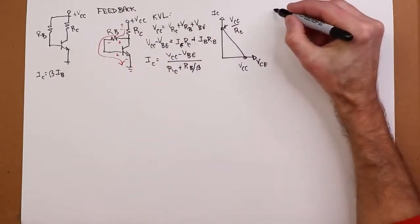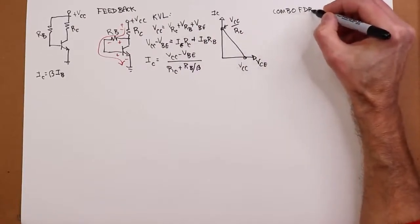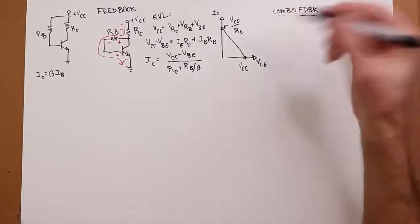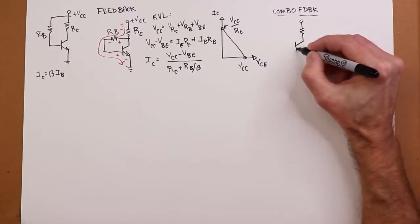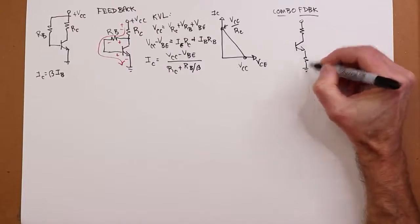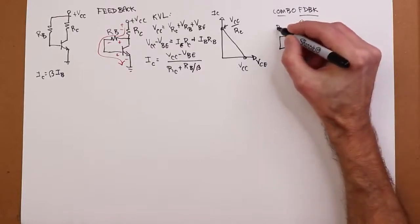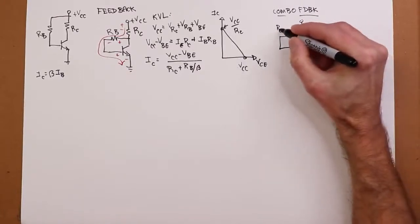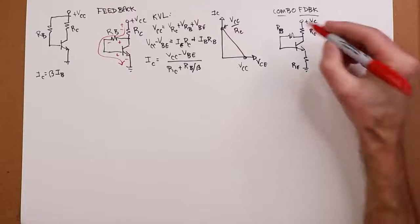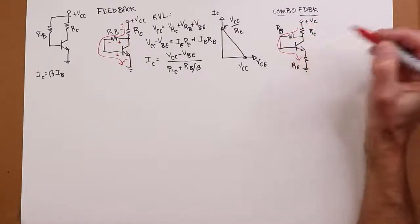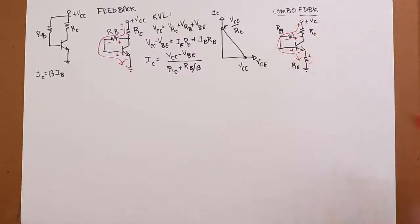Then we can do what I like to call a combination bias or combination feedback bias, where we do both. All right. Why do one when you can do both? So here's our emitter resistor, base, collector. And we, once again, do the KVL here. And we can see there's four things: this resistor, base, base emitter, and an additional VRE.